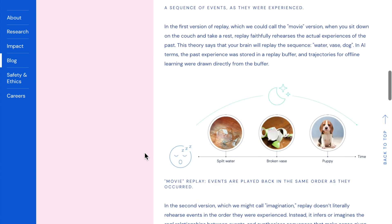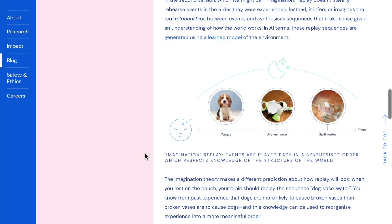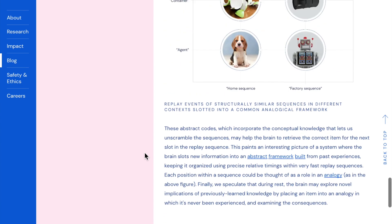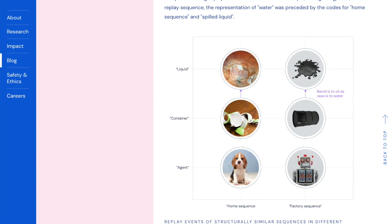Movie replay refers to replaying in the exact sequence of events that happened — basically storing the entire experience. Whereas with imagination replay, you have abstract things stored in the replay buffer and your model of the world interprets how they might correlate during sleep. The post goes on to compare how humans do conceptual reasoning of a sequence of events and how this might provide new insights into AI with respect to experience replay and deep reinforcement learning.